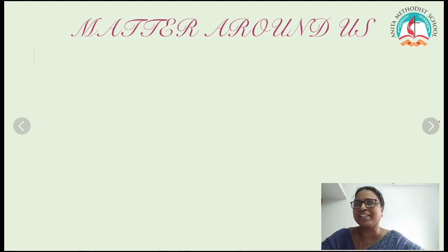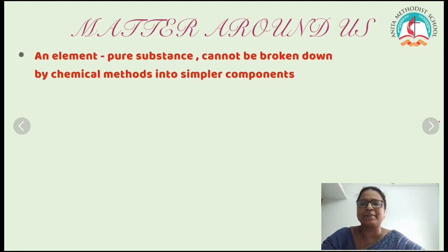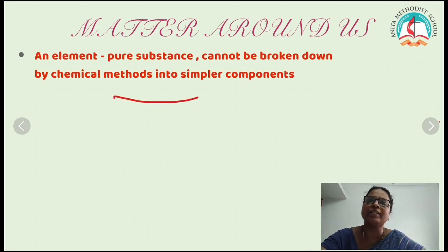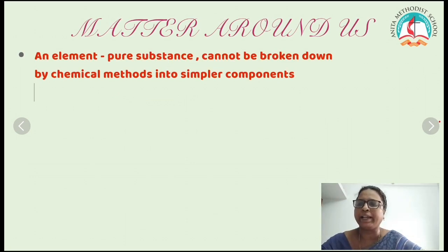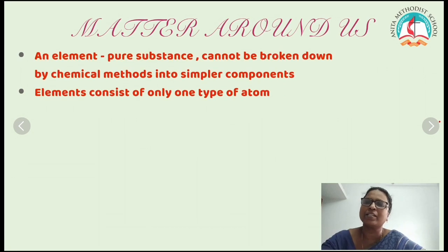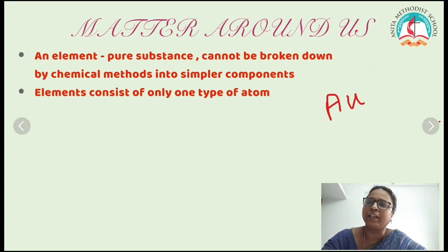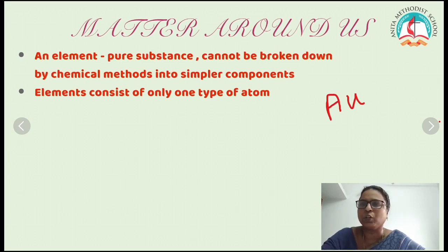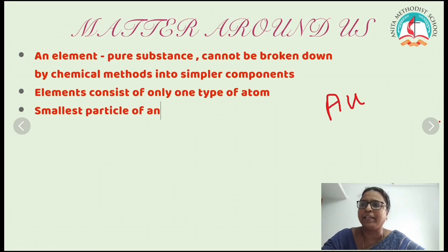First we want to know what is an element. An element is a pure substance and cannot be broken down by chemical methods into simpler components. The elements consist of only one type of atom. For example, we can take gold, Au. When you break it into pieces, you will get gold only — we are not getting any other element.